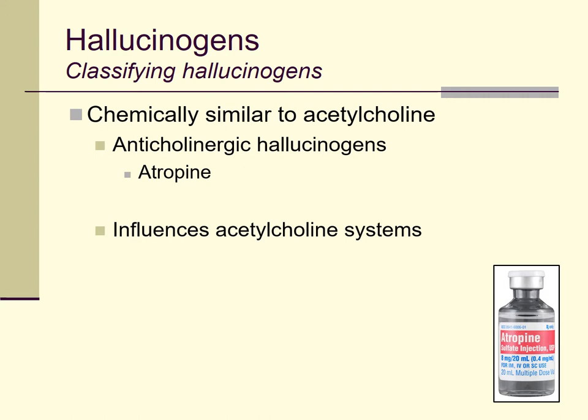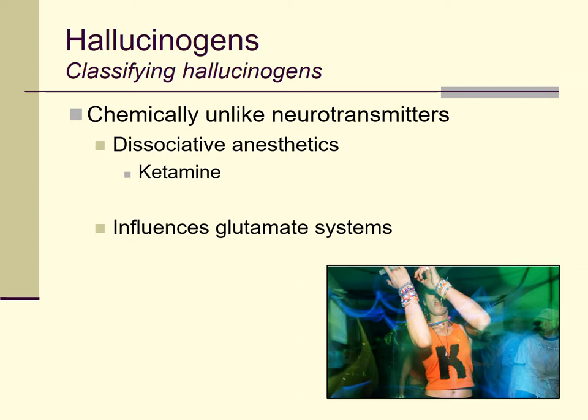There's a whole group of hallucinogens which act upon the acetylcholine systems in the brain — the anticholinergic hallucinogens. Atropine is an example. There are also hallucinogens chemically unlike neurotransmitters that we don't fully understand. Ketamine is an example; it seems to influence the glutamate systems of the brain, although it does so not because it chemically resembles glutamate or any other neurotransmitter.